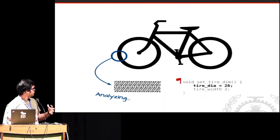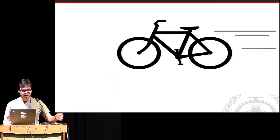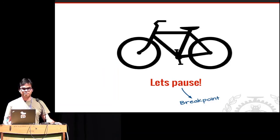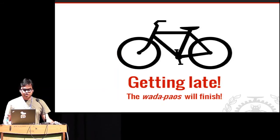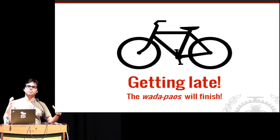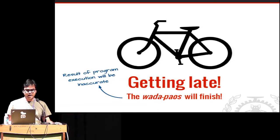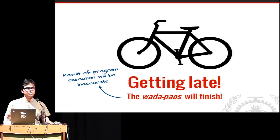You put a breakpoint in your program, pause it, and start analyzing — okay, let me put a breakpoint here and see. Then you continue riding and pause again at another breakpoint. The thing is you are getting late now. Getting late means the store is closed and you can no longer buy waffles. Not having waffles means the result of program execution is inaccurate — in a normal execution it would have been fine.